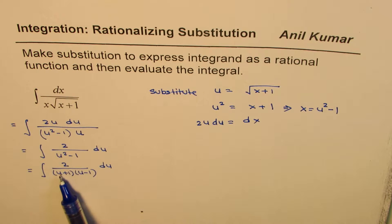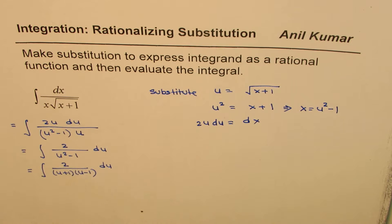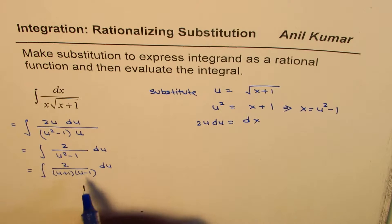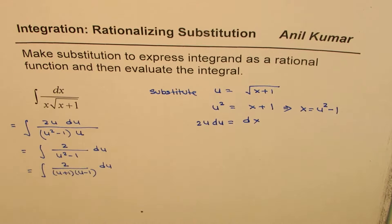Now 2 over u plus 1 times u minus 1 could be written in the factored form. So let's do that part. So let's write down how. So I will do it on this right side.